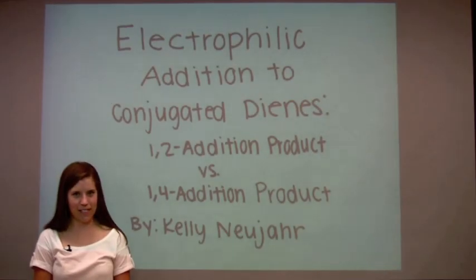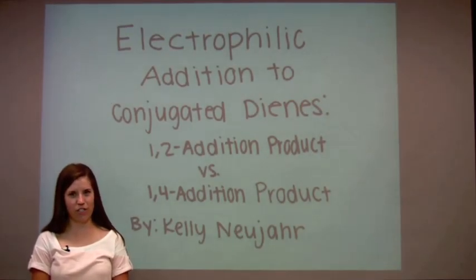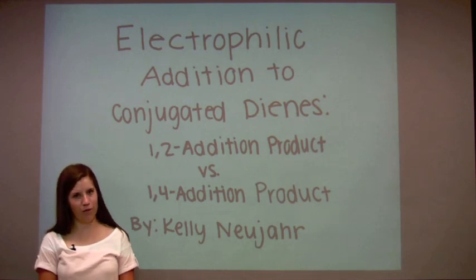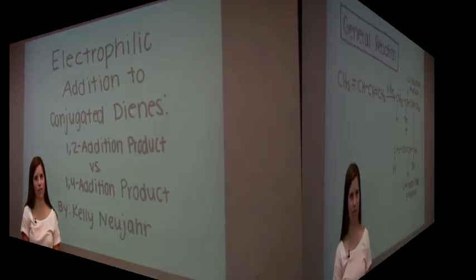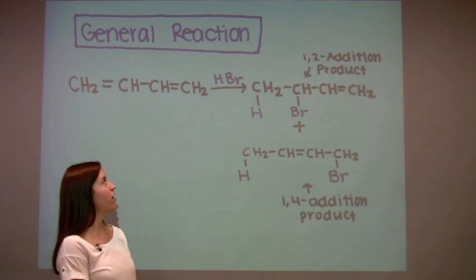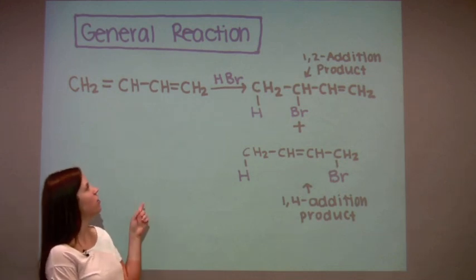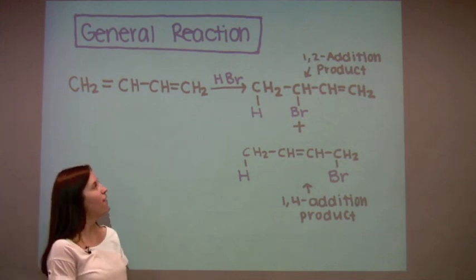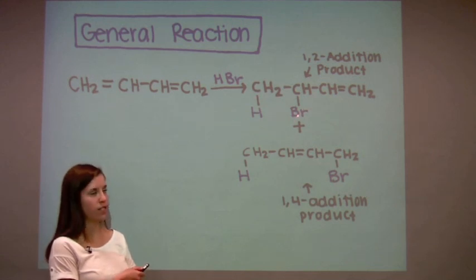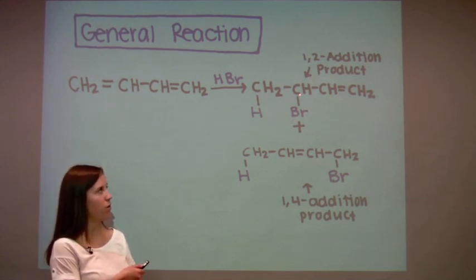In this video, I'm going to be discussing an introduction to electrophilic addition to conjugated dienes, where 1,2 and 1,4 addition products are formed. This is the general reaction where HBr is added to the conjugated diene. For the first product, we have hydrogen bonded to the first carbon and bromine bonded to the second carbon. This is known as the 1,2 addition product.